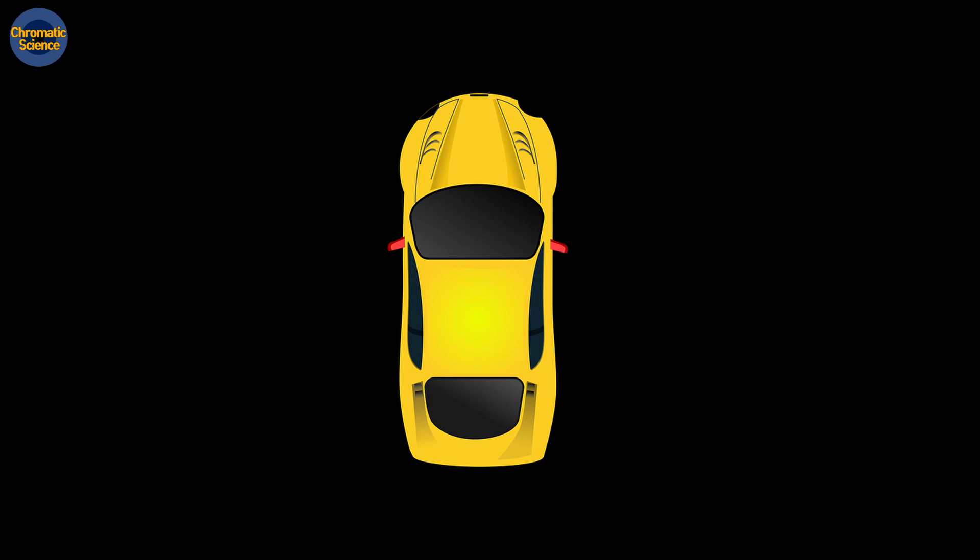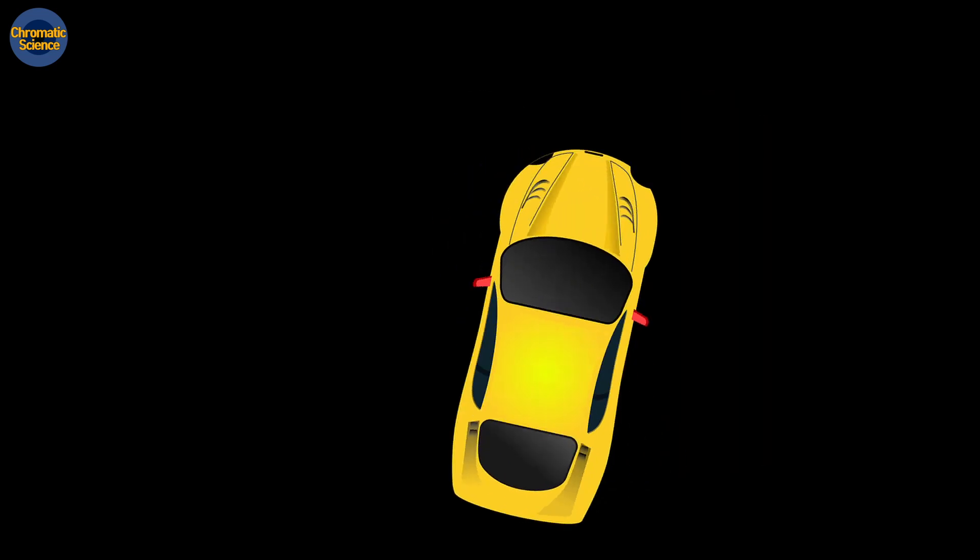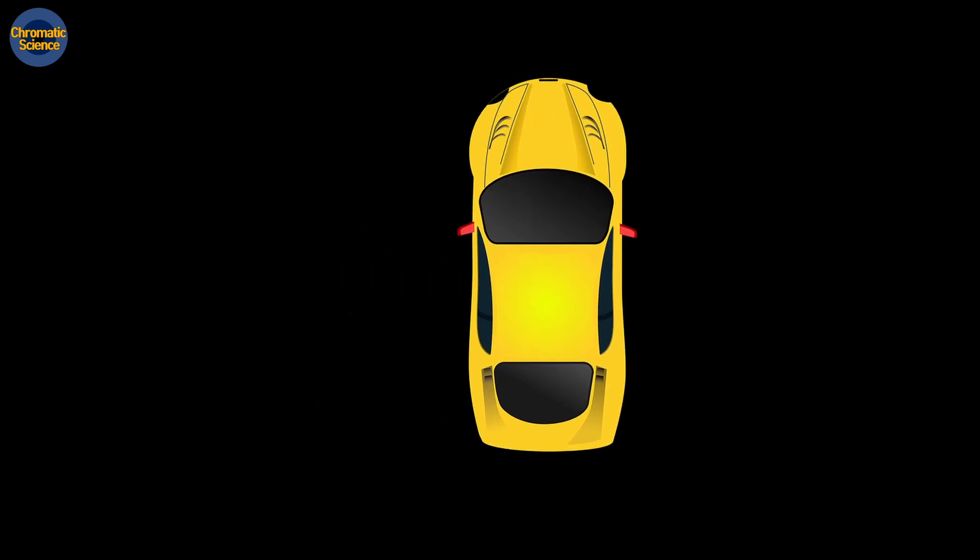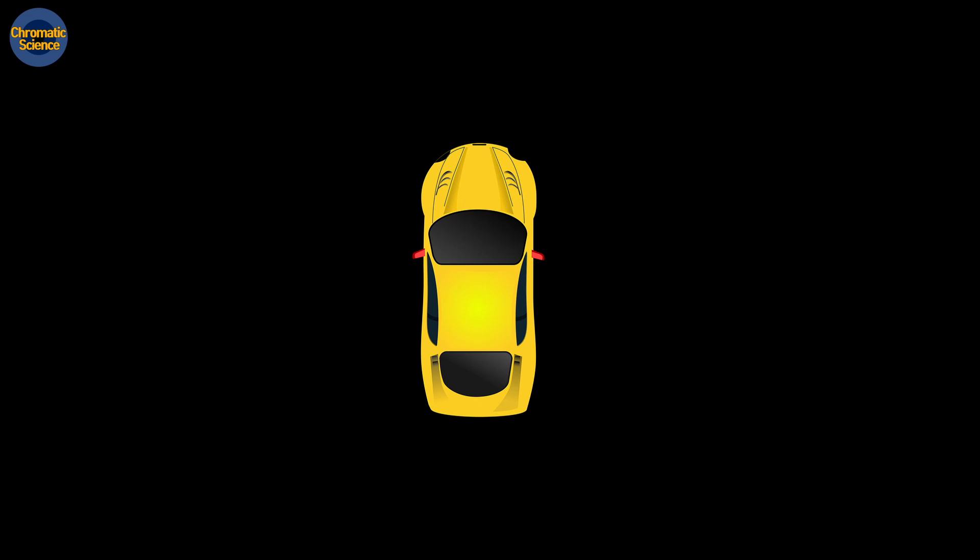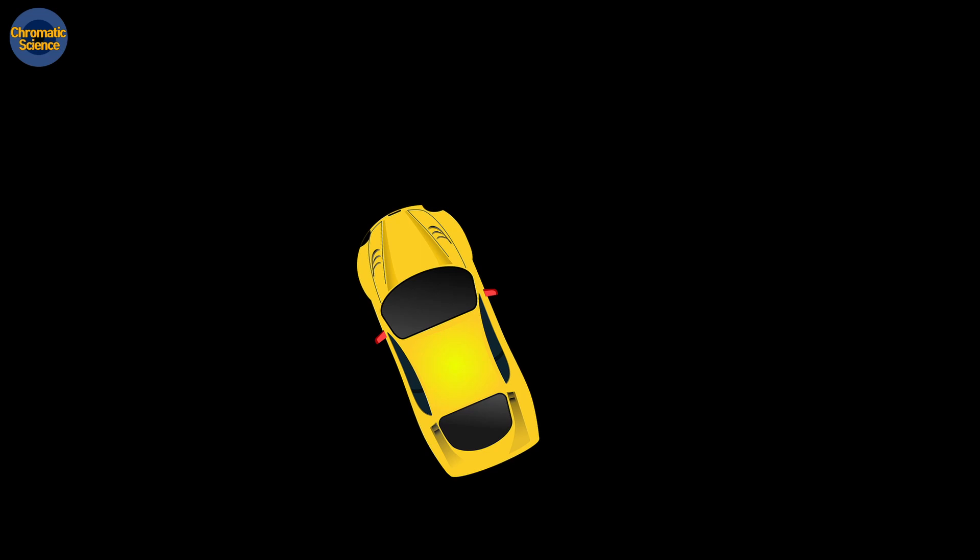Here, car has a distinct property compared to the toy Etch-a-Sketch. That is, the orientation of a car is important in addition to its position. In Etch-a-Sketch, we control the horizontal and vertical positions of the pen using the two input knobs. In contrast, for a vehicle, we can achieve the horizontal and vertical positions, as well as the car's orientation using two inputs.